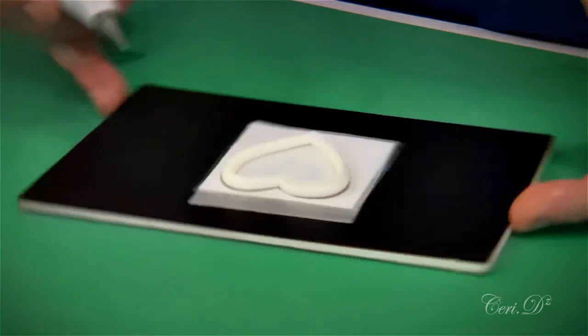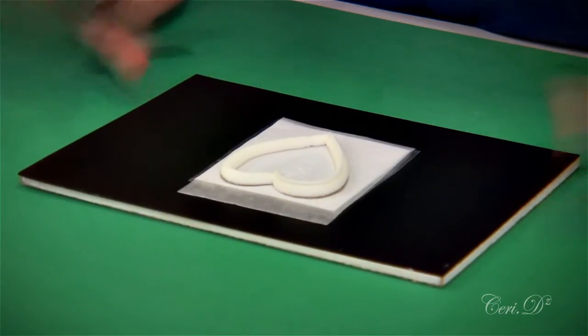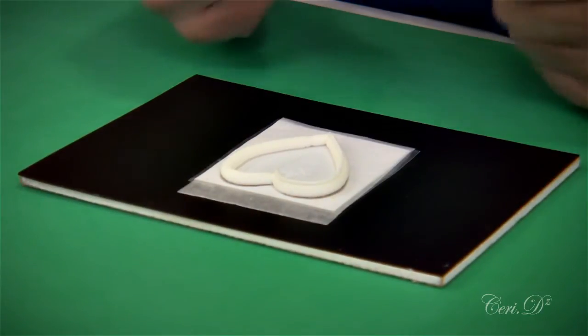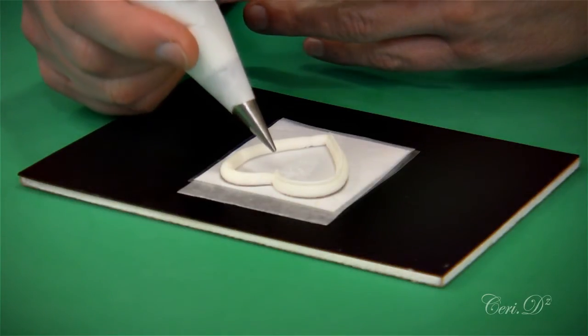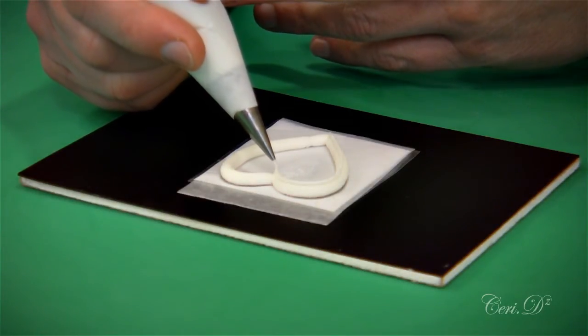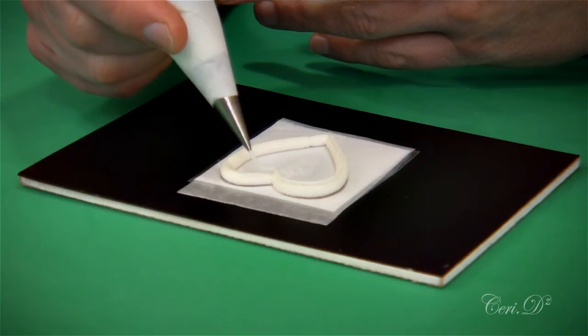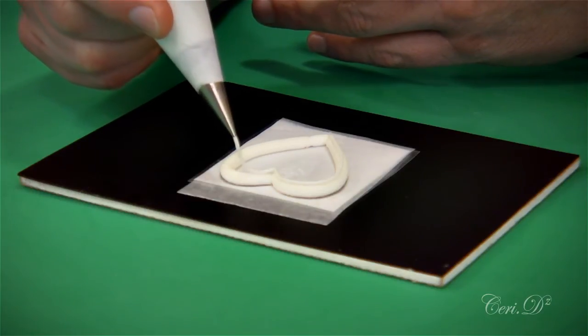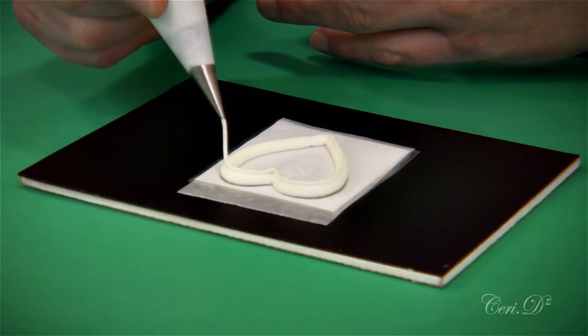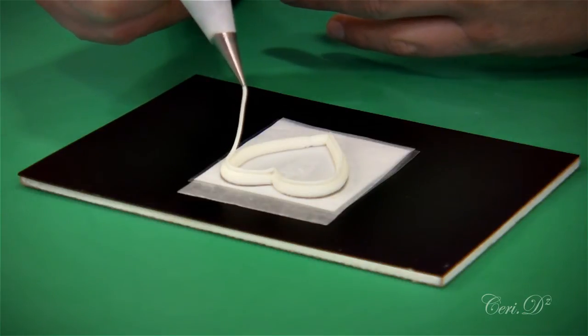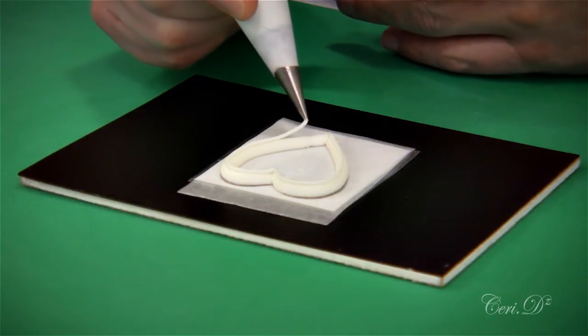Again, turning it around because it's easier if you're right-handed to pipe left to right. If you're left-handed, you can pipe right to left. Just put that line on there one more time, pipe it over the top. This just accents your heart shape and gives it a bit of finish.